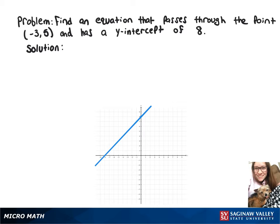To find an equation of the line that passes through negative 3, 5 and has a y-intercept of 8, we'll start by finding the slope. So we'll do 8 minus 5 over 0 minus negative 3, and that'll give us 3 over 3, or just 1.